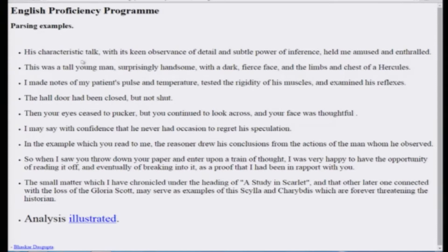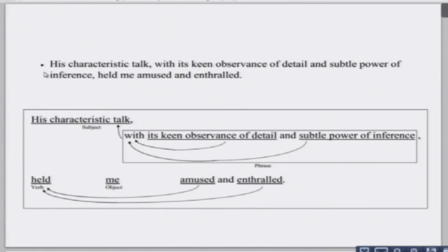Take five minutes and try to study these sentences and figure out what kind of sentence each of them is. First one: 'His characteristic talk with its keen observance of detail and subtle power of inference held me amused and enthralled.' Here, 'his characteristic talk' is the subject of the sentence. 'Held' is the verb actually operating like the proper verb. 'Me' is the object. 'Amused and enthralled' are two adverbs qualifying the verb 'held'.